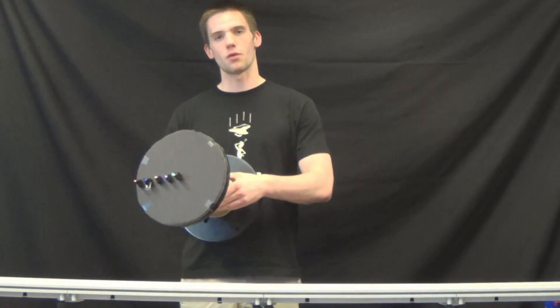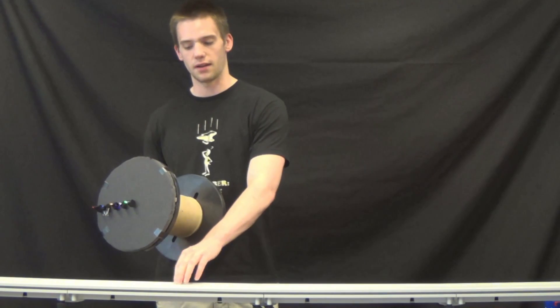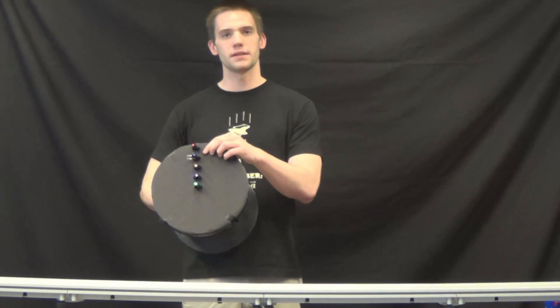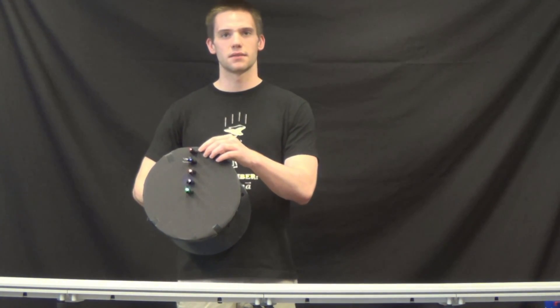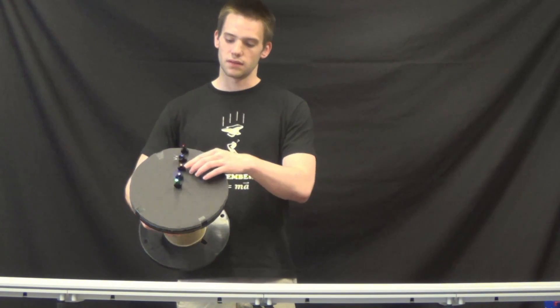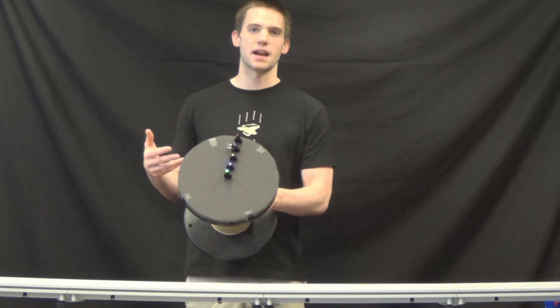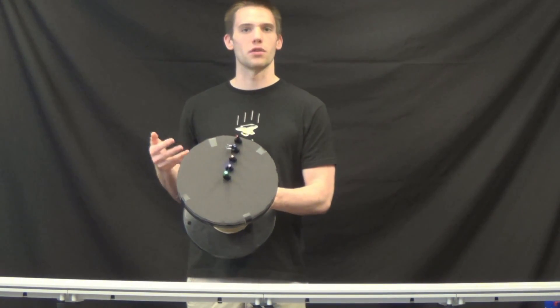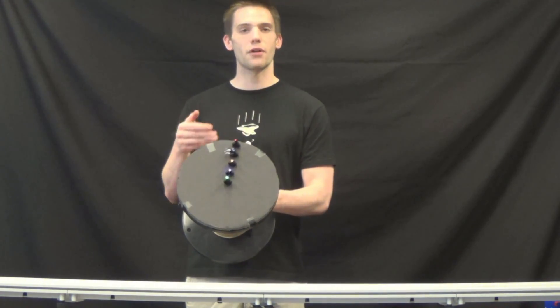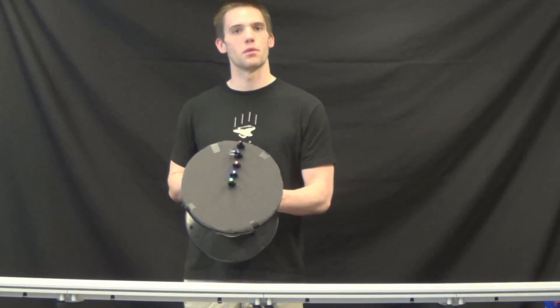We have a spool that will roll without slip on its inner radius on this track here. To track points on it, we have LEDs. The yellow is exactly on the inner radius of the spool, and anything inside of that will act exactly like a wheel rolling without slip. The outer points will have more interesting paths that we will also track.